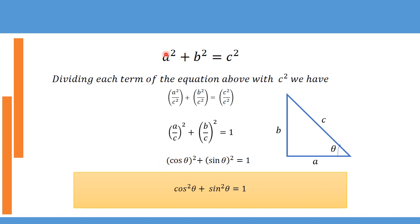We already know a² + b² = c² from Pythagoras' theorem. Dividing each term of this equation by c², we get a²/c² + b²/c² = c²/c². This last term simply becomes 1, since c²/c² = 1.